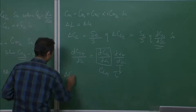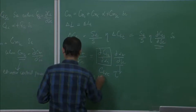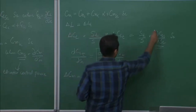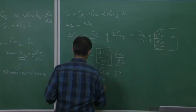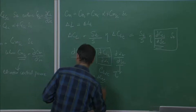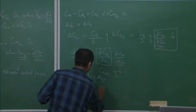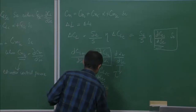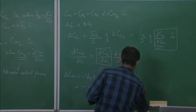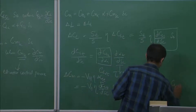The increment in pitching moment coefficient is given as ΔCM = −VH × η × ΔCLT. Substituting the expression for ΔCLT, the pitching moment increment becomes CM_δE × δE = −VH × η × CL_αT × τ, giving the formula for CM_δE.